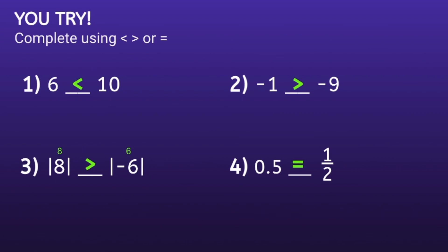Alright, let's take a look. For number 1, 6 is less than 10. For number 2, negative 1 is greater than negative 9. For number 3, the absolute value of 8 is greater than the absolute value of negative 6. And for number 4, 0.5 is equal to 1 half.